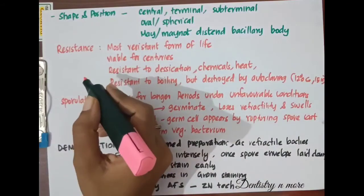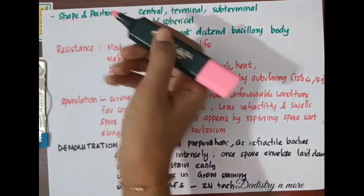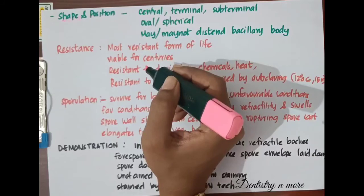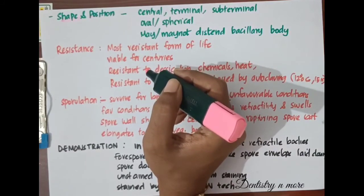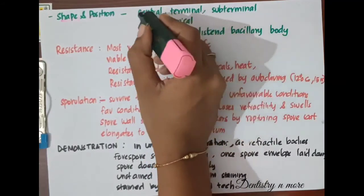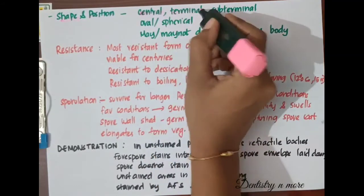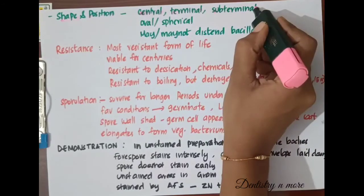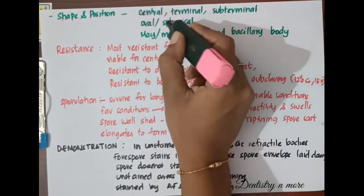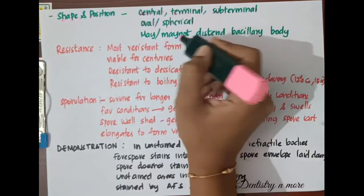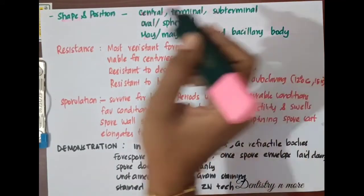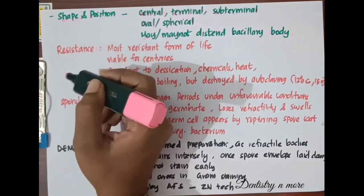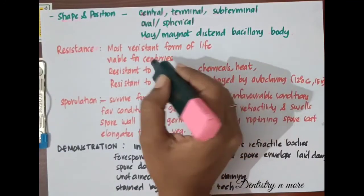The shape and position of the spore and its size relative to the parent cell are species characteristics. The spore can be central or equatorial, terminal or subterminal. The shape can be oval or spherical, and the spore may or may not distend the bacillary body.